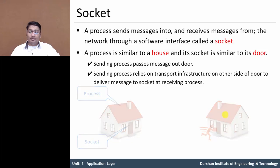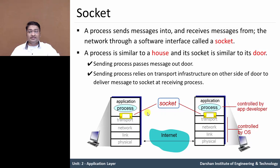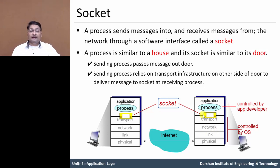Let's look at this example in the context of networking layers. In the application layer, many applications are available. An application wants to send a message to further layers, and it can do so through a socket — the socket is the door and the process is a particular program of that layer. The application is controlled by the application developer, while the other layers are controlled by the particular operating system.